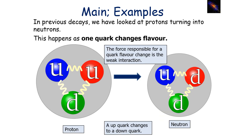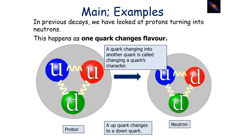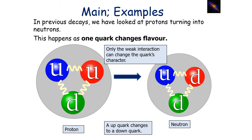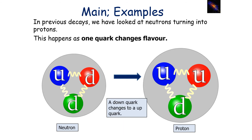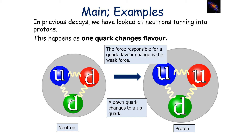In decays, we've looked at protons turning to neutrons. This happens because one quark changes flavour. The force responsible for a quark flavour change is the weak interaction. A quark changing into another quark is called changing a quark's character, and only the weak interaction can change a quark's character. The exchange of the W and Z bosons causes a quark to change character, to change flavour. In a neutron turning to a proton, a down quark changes to an up quark.